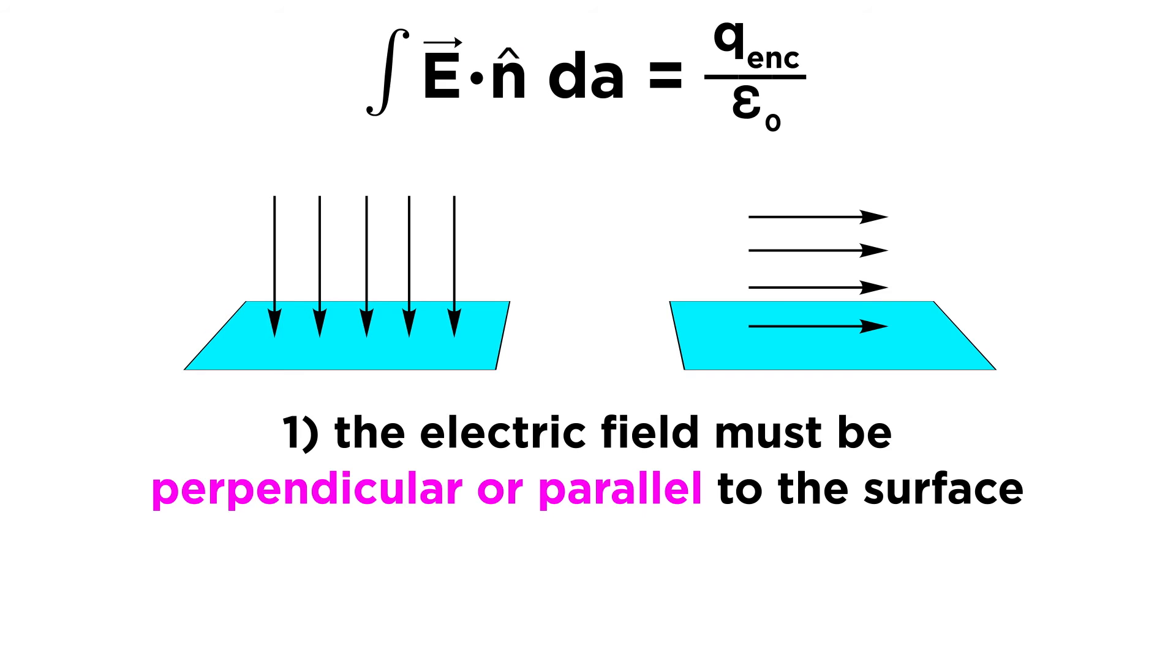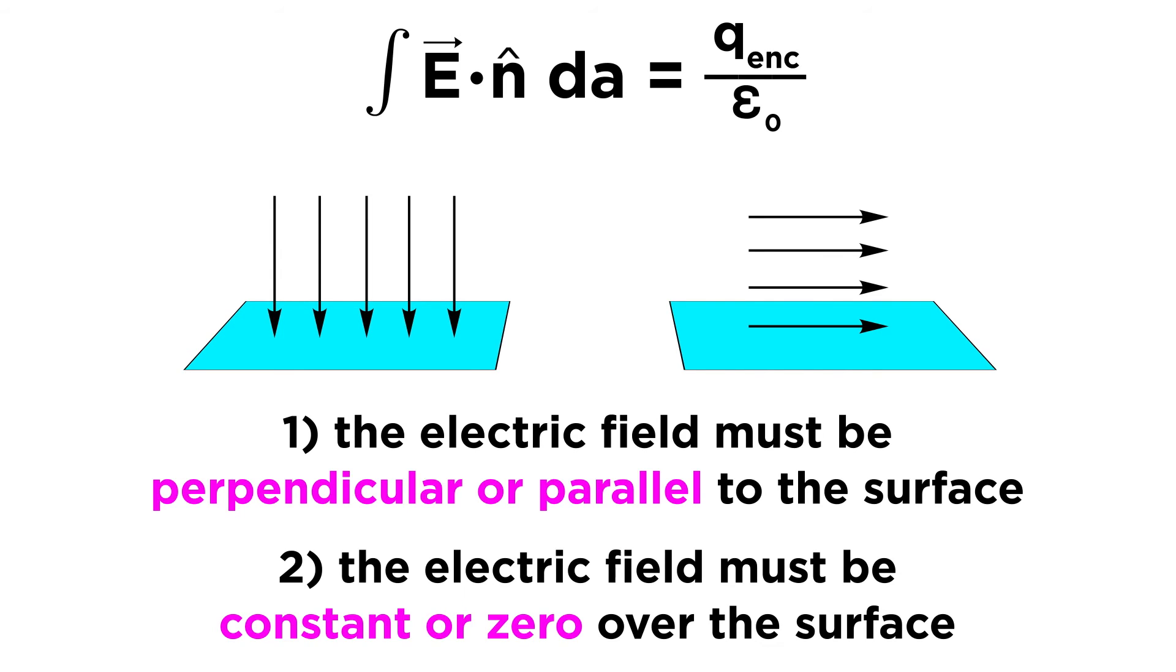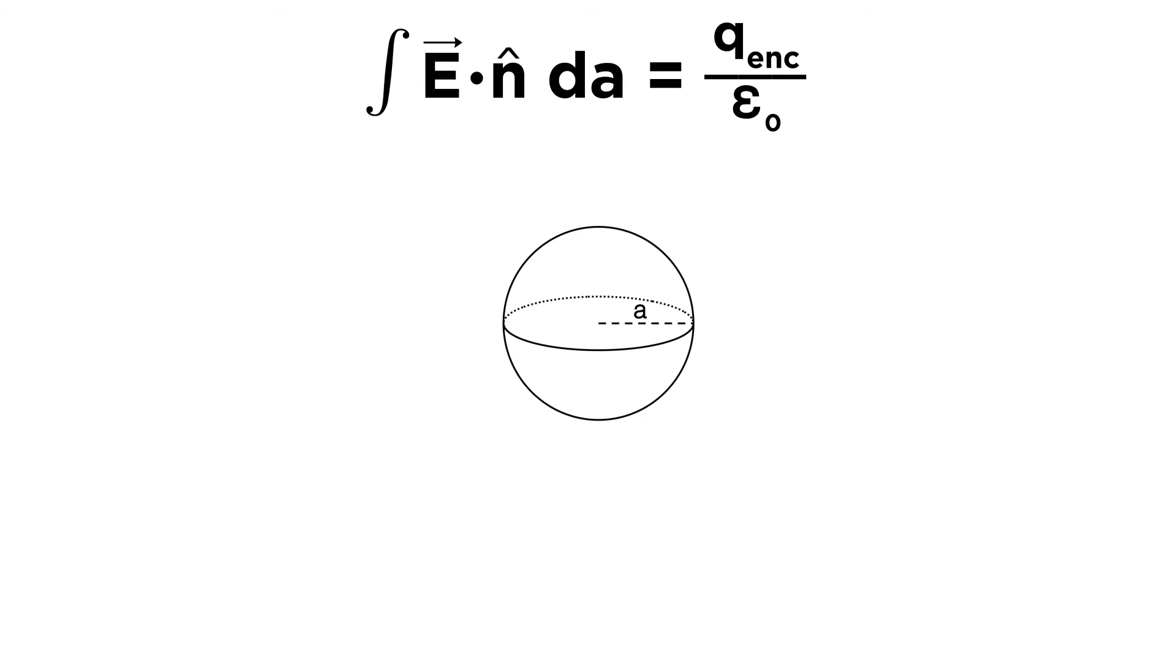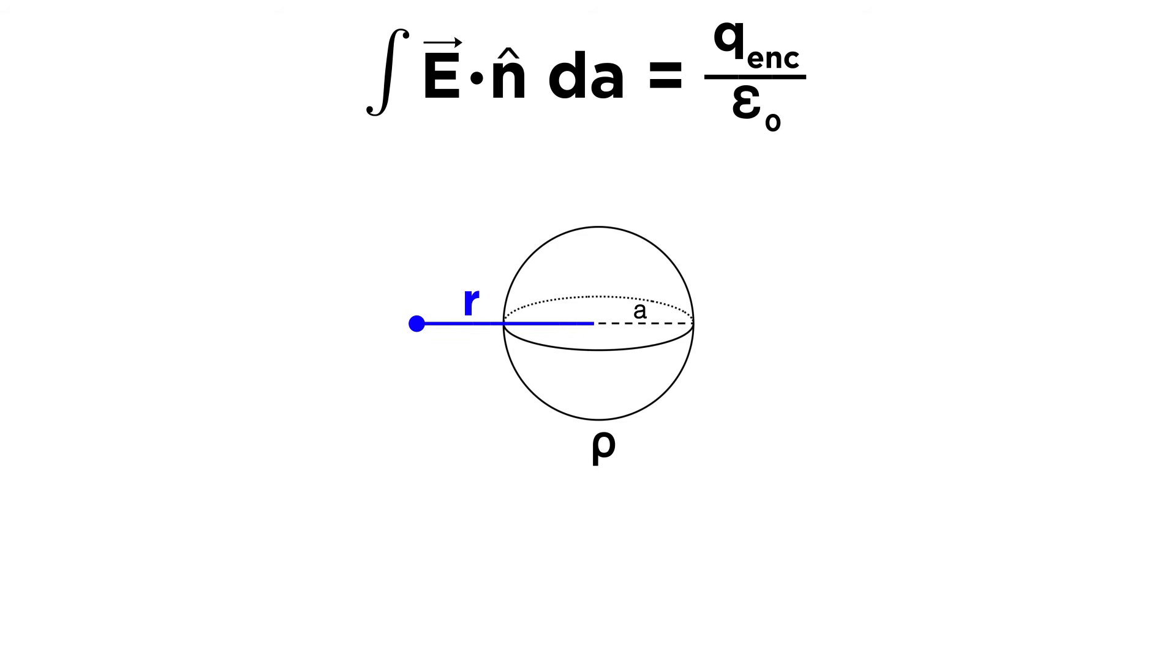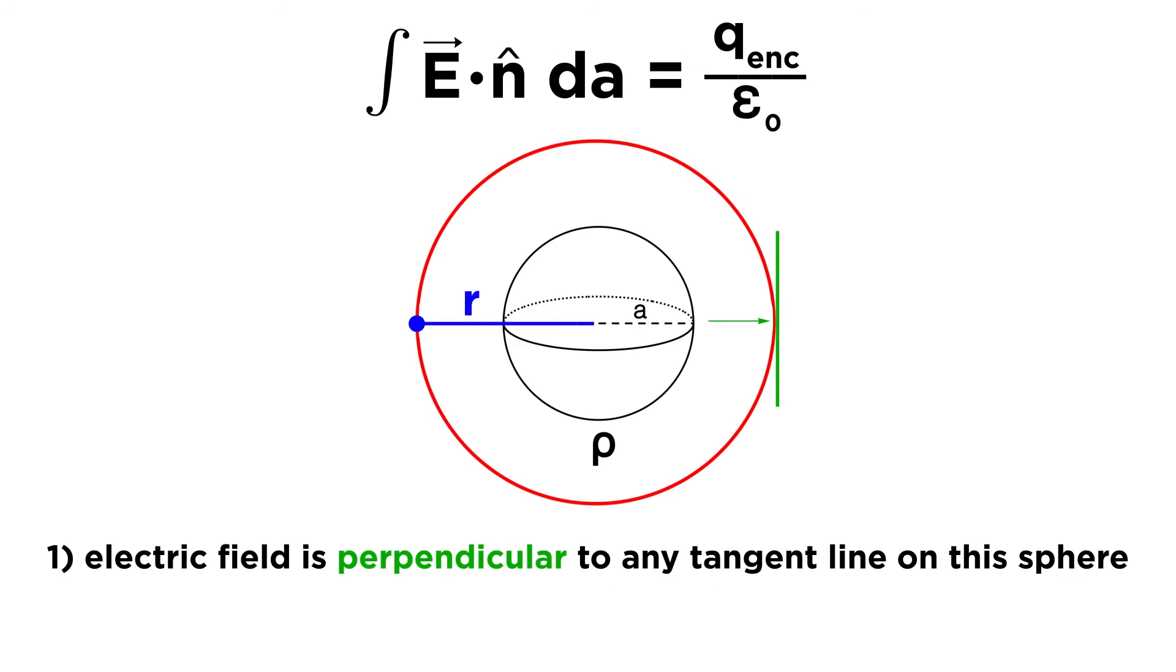Thus, with Gauss's law for the electric field, the electric field must be perpendicular or parallel to the surface, and the electric field must be a constant or zero over the surface. Let's solve a problem that meets these conditions. Suppose there is a small charged sphere in space with a uniform volume charge density, rho, and radius A. We need to find the electric field at a distance r from the center of the charged sphere. To do this, we must create a special Gaussian surface around the charged sphere. This surface has to meet the two criteria we mentioned before, and a sphere of radius r will do it. The electric field will be perpendicular to the surface, and the electric field will be constant over the surface because the charge distribution inside the Gaussian surface is spherically symmetrical.